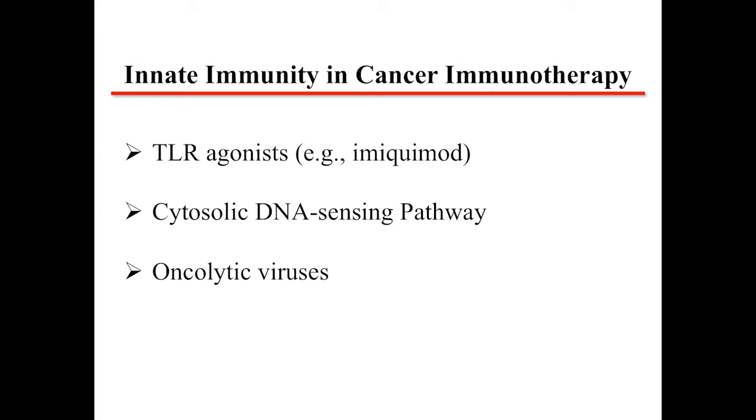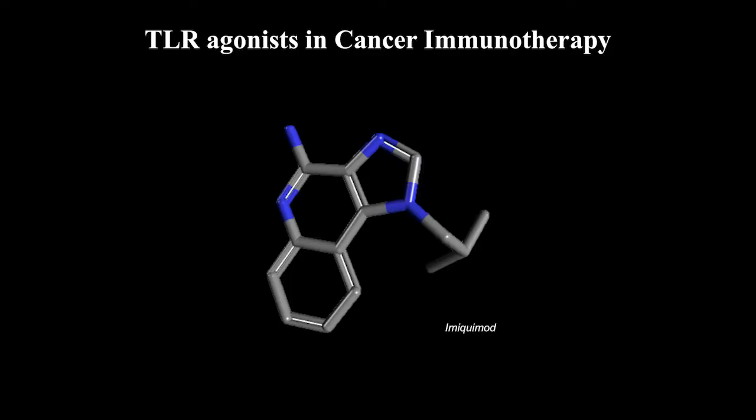We start with TLR agonists in cancer immunotherapy. TLR agonists are toll-like receptor agonists, and toll-like receptors are pattern recognition receptors expressed by various innate immune cells and even non-immune cells like epithelial cells. They recognize various molecules from pathogens and damaged cells — what we call PAMPs and DAMPs — and translate that into activation of the immune response.